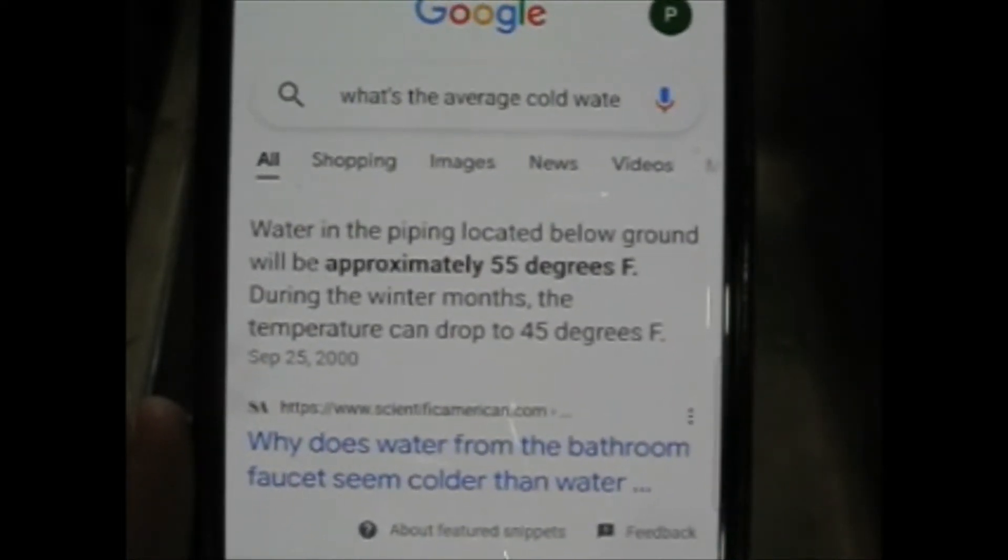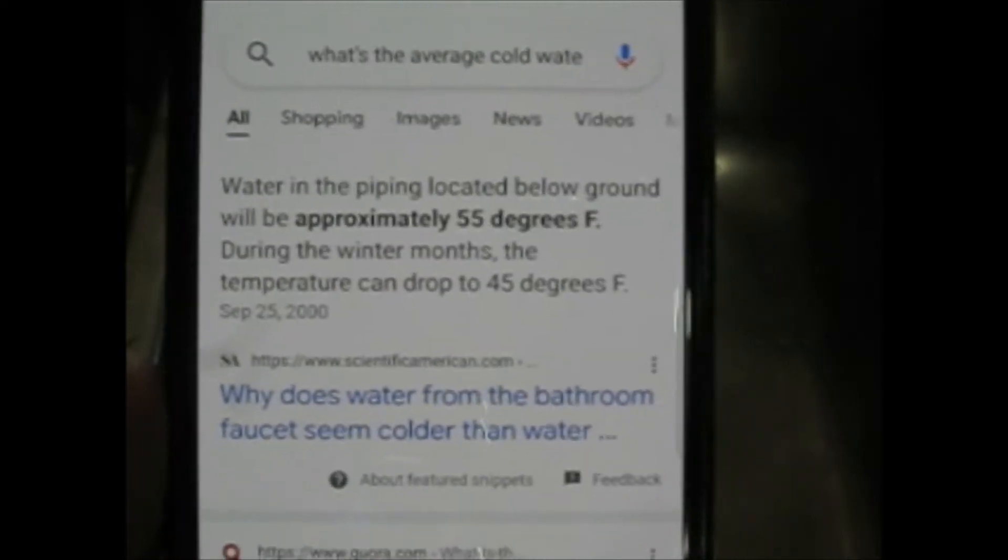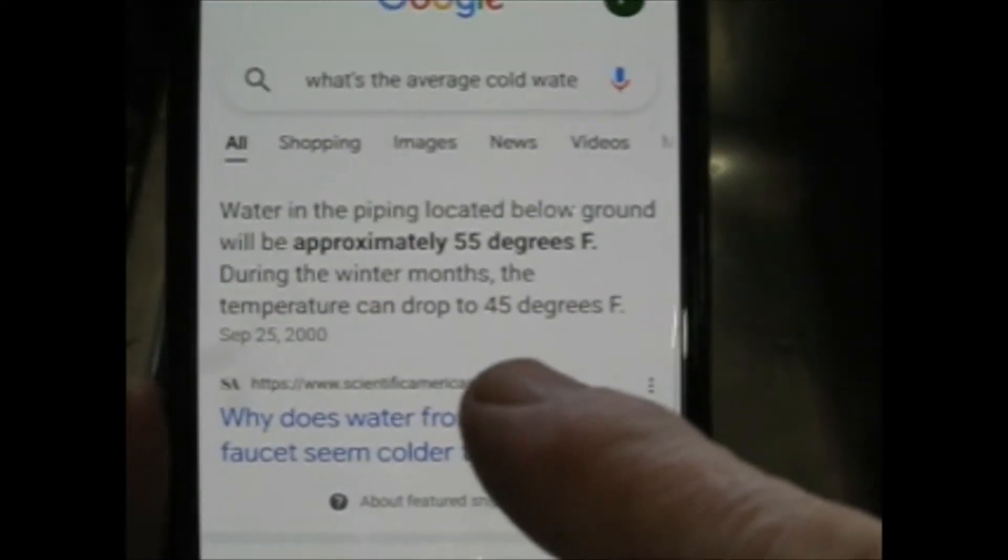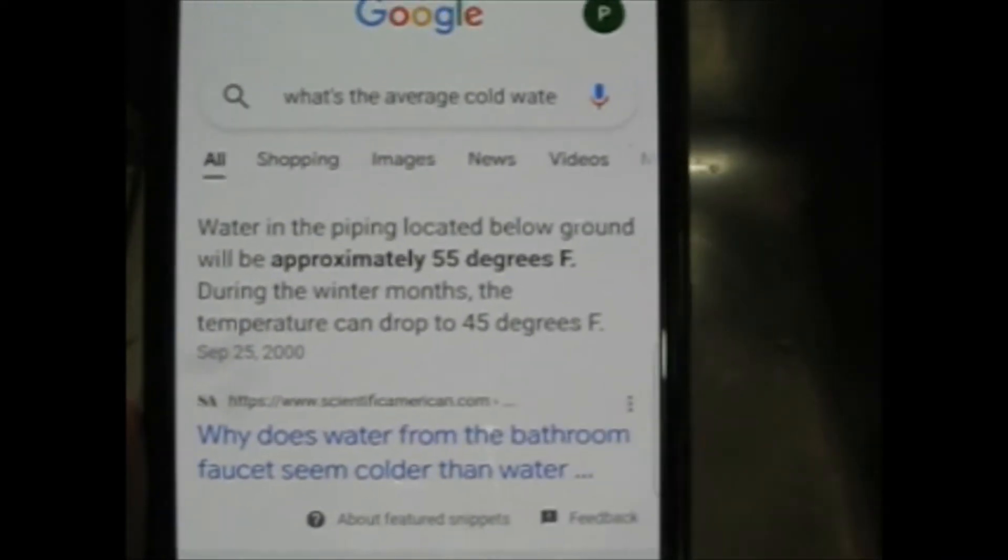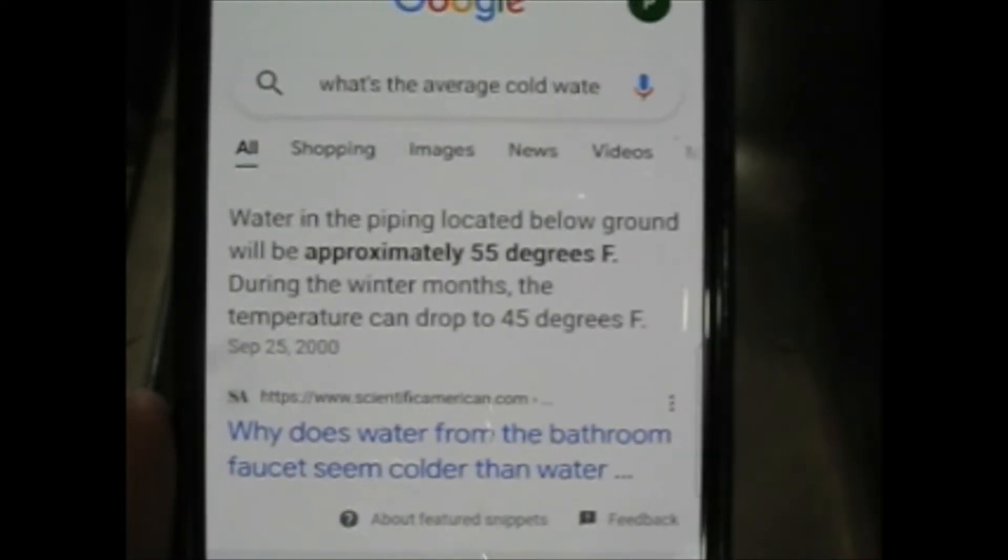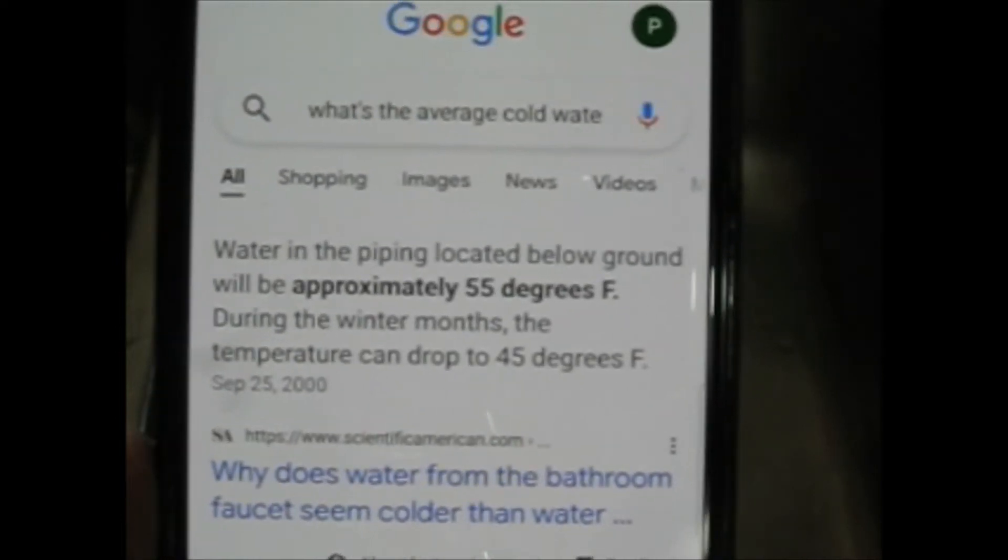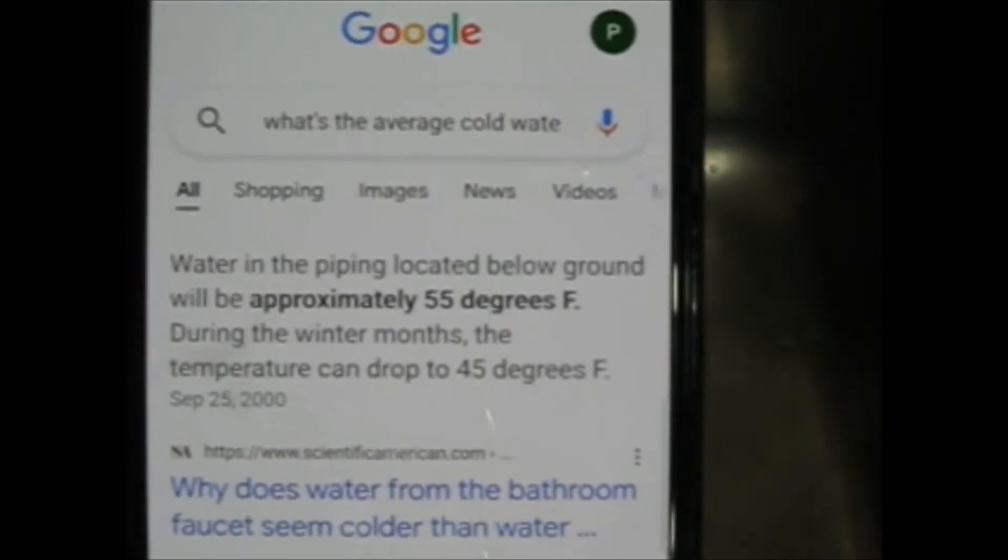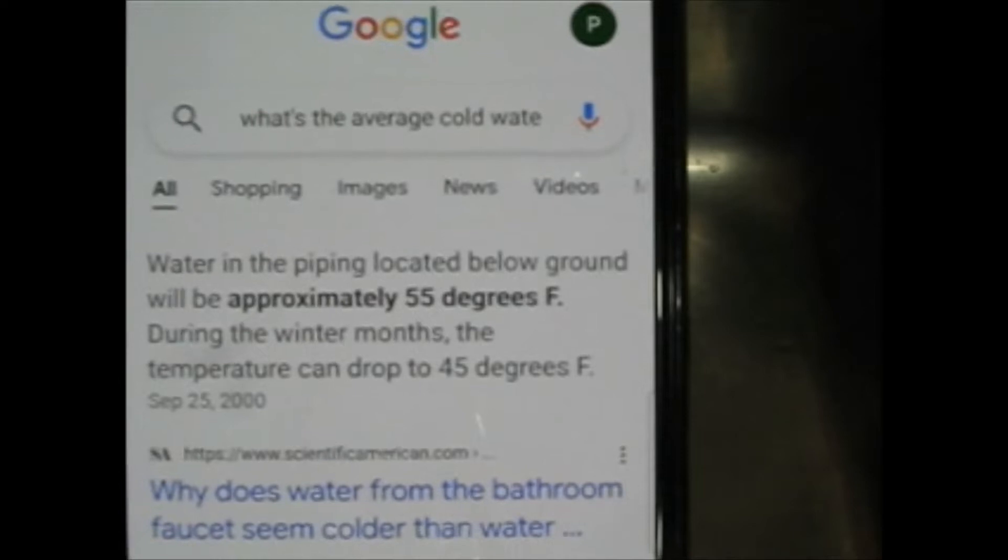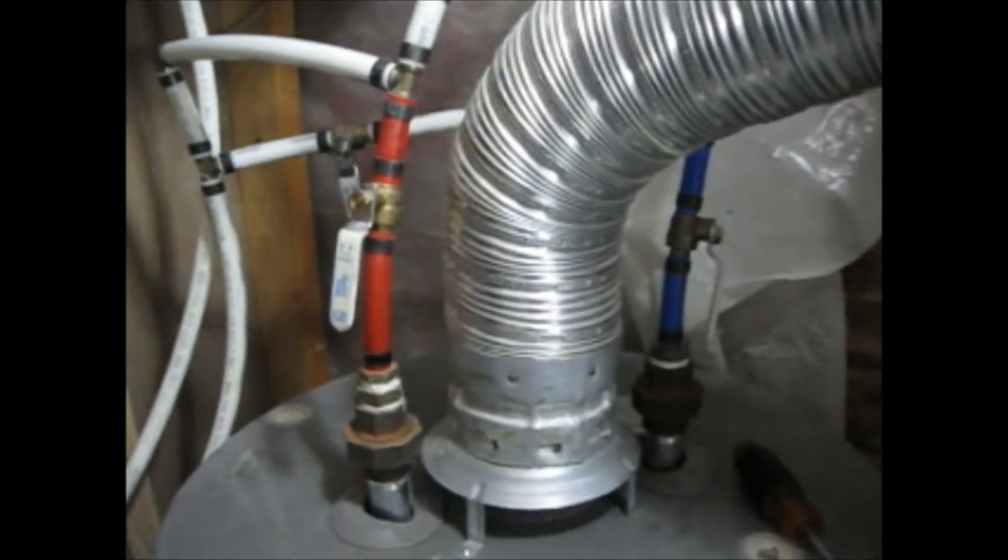Now according to Scientific American, the average temperature of cold water coming into a house is 55 degrees, but they do say the water temperature can drop down to 45 degrees. Well that's a normal occurrence for me. Last year when I was doing a temperature check I actually had water, when it was frigidly cold last year below zero, my water was 37 degrees.